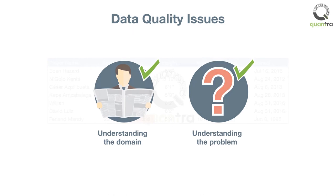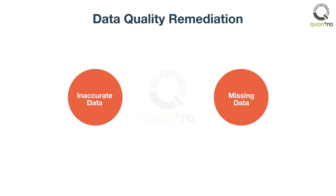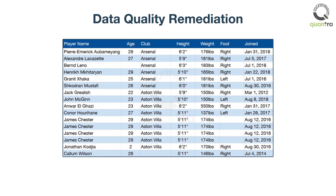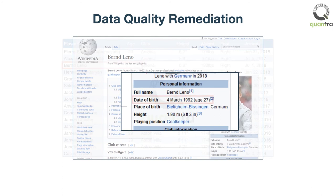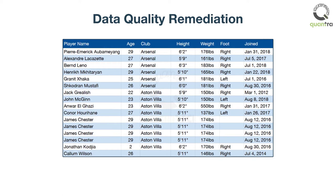How do you fix these data quality issues? Once you identify the inaccurate and missing data, you can use an alternate source of data, if available. For example, if Bernd Leno's age is missing, you can get it from an alternative source such as Wikipedia. However, this approach is not always possible, as you can't find an alternative source for every data set or data point.